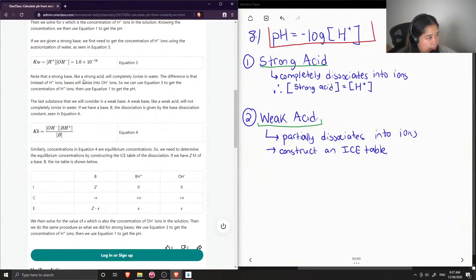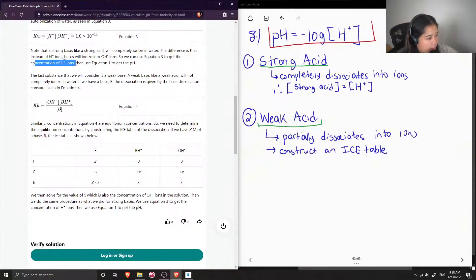Strong bases also ionize completely in water, but it ionizes to OH- ions. So by using equation 3, they can get the concentration of H+, and then solve for pH. So it's just an extra step.